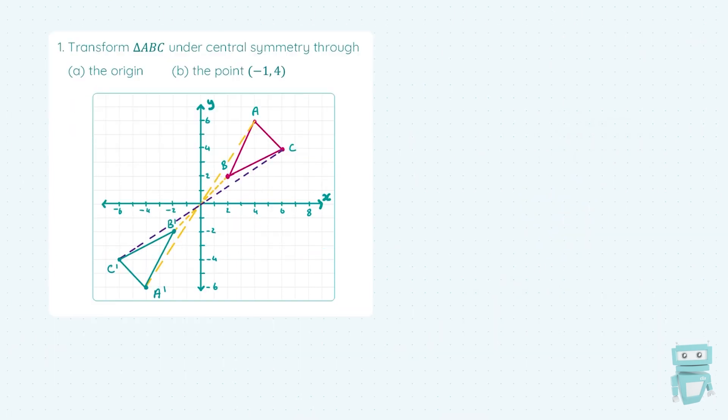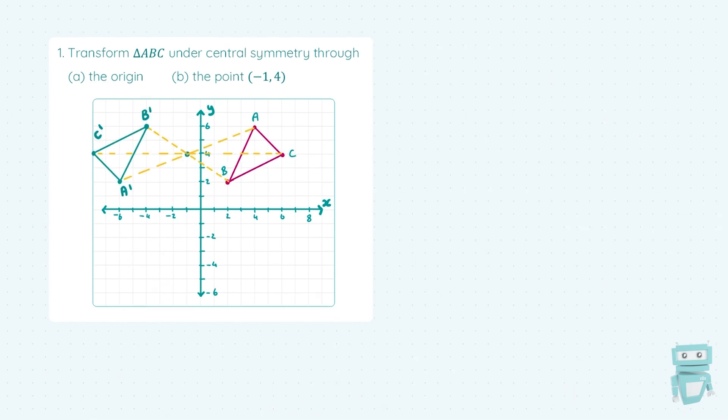In part A, we're reflecting our object through the origin using central symmetry — don't forget to include your construction lines. In part B, we're transforming the object under central symmetry through the point (−1, 4), so we have to plot that point first, then reflect our object through it. Thanks for watching.